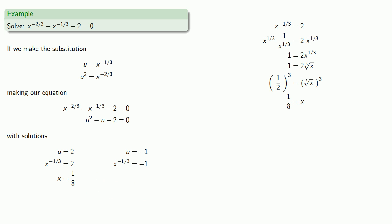This other equation, x to power minus 1 third equals negative 1, we can go through the same steps, giving us x equals minus 1 as a second solution.